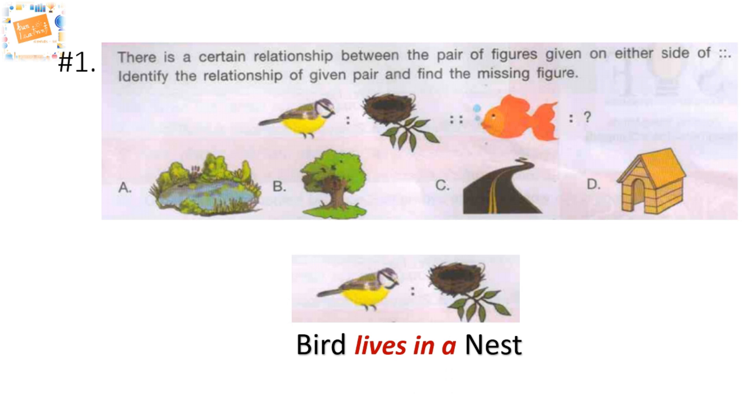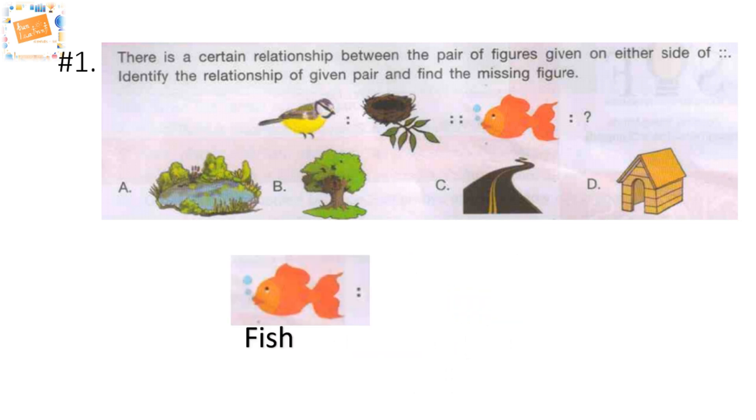So if bird is to nest, then the fish is to what? Well, fish lives in a pond. So the correct answer is option A.